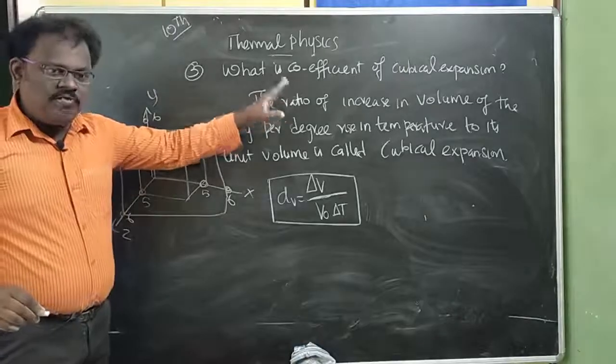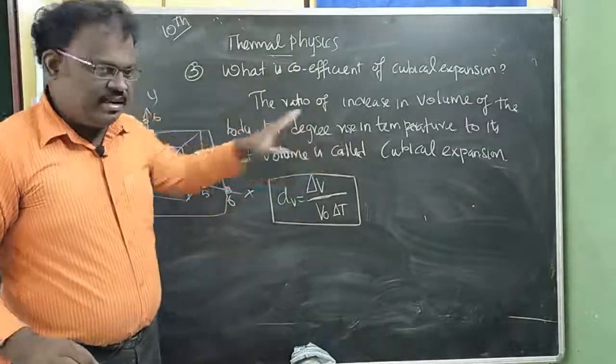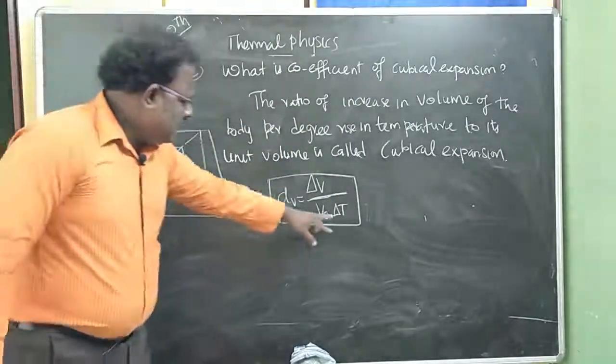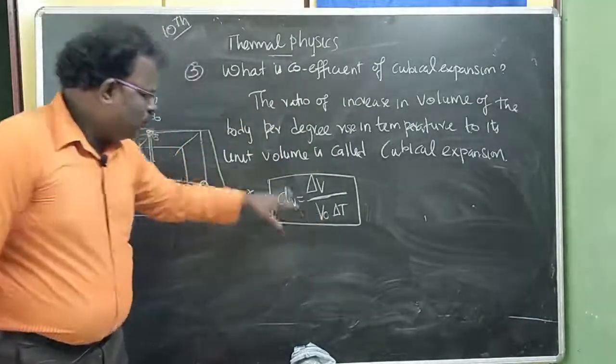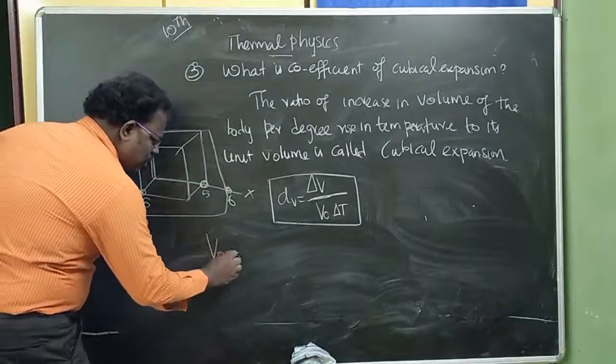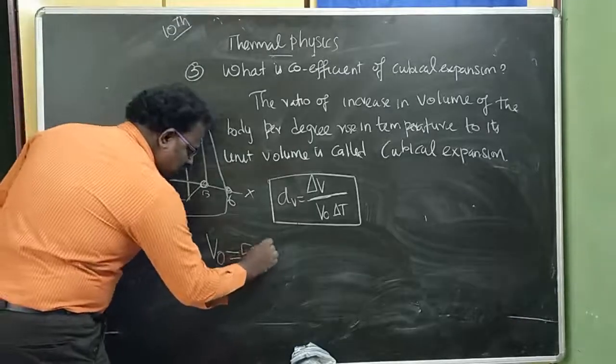The ratio of increasing volume of the body per degree rise in temperature to its unit volume. Now, what are you doing? This is the original volume. The heat of the volume is 5 into 5 into 5.